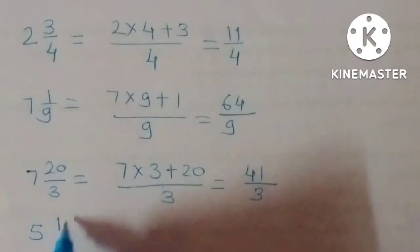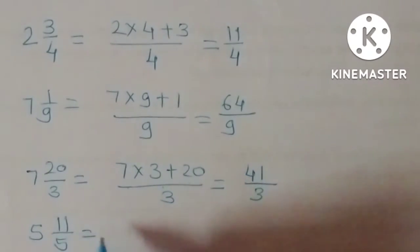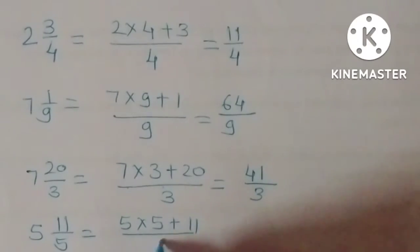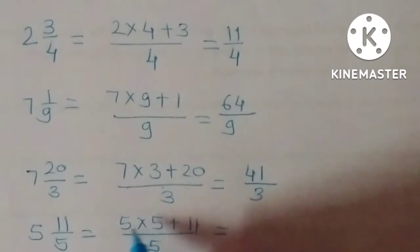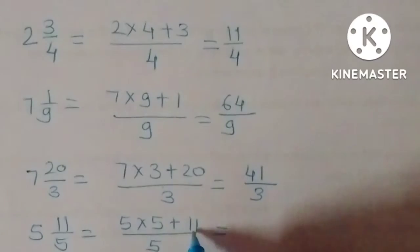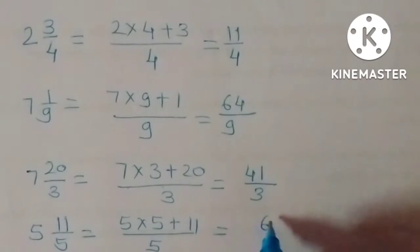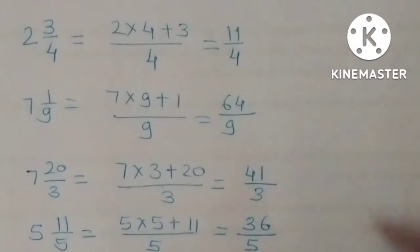Next, 5 and 11/5. 5 into 5 plus 11, upon 5. 5 fives are 25. 25 plus 11 gives 36 upon 5.